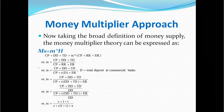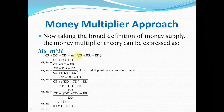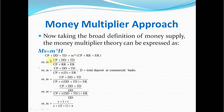Taking the broad definition of money supply, the money multiplier theory can be expressed as: money supply equals m times H, where money supply is currency with public plus demand deposits plus time deposits, and reserve money is currency with public plus required reserve plus excess reserve. From this, we can rearrange the terms to solve for the multiplier m.